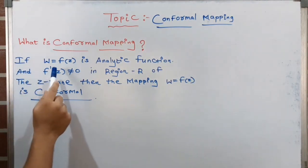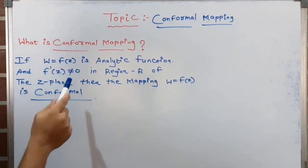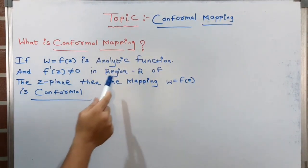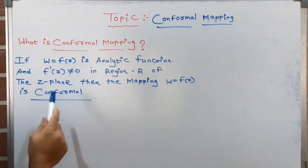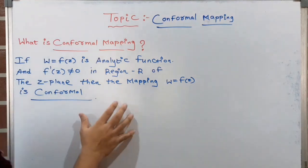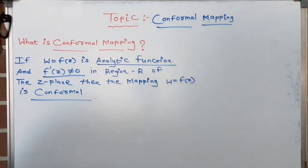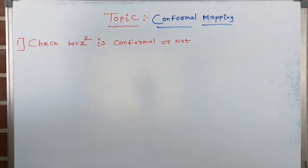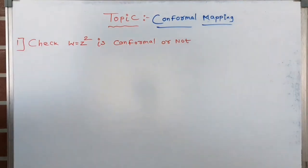Now we will look at conformal mapping. If w=f(z) is an analytic function and f′(z)≠0 in a region R of the z-plane, then the mapping w=f(z) is called a conformal mapping. Now we will solve some sums. The first question is: check whether w=z² is conformal or not.